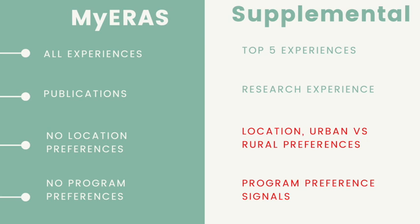For a rank order list, that's after you submit your application and do your interviews, and then you have to create that rank order list. However, for the program preference signal, this is submitted before you even get an interview. It's basically letting the program know that this is a program you definitely want to match into and are interested in. This option not only benefits applicants but also programs, because oftentimes programs send invitations to applicants who already have their dream school and don't really want to match there. This allows programs to see who really wants to go there.